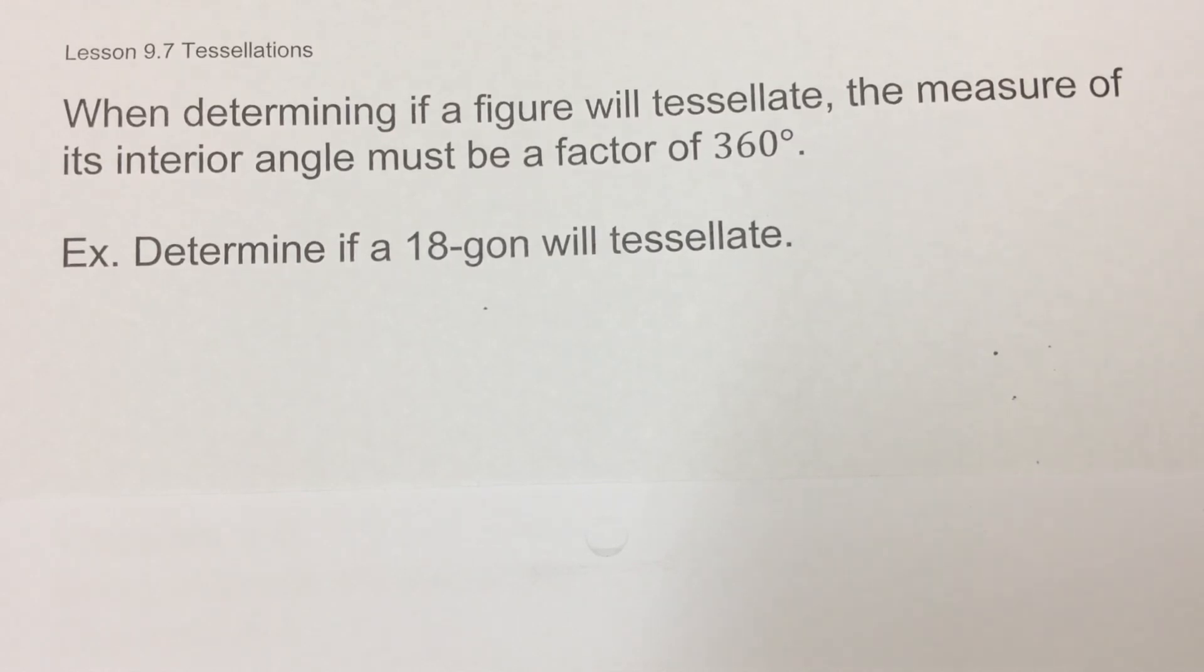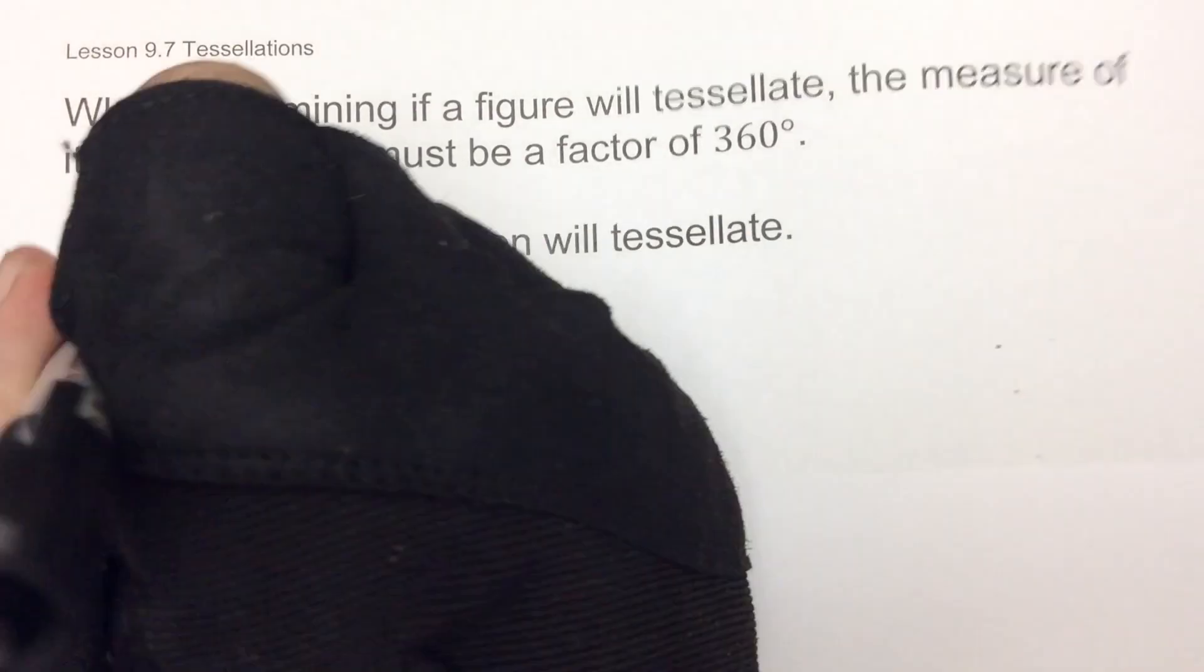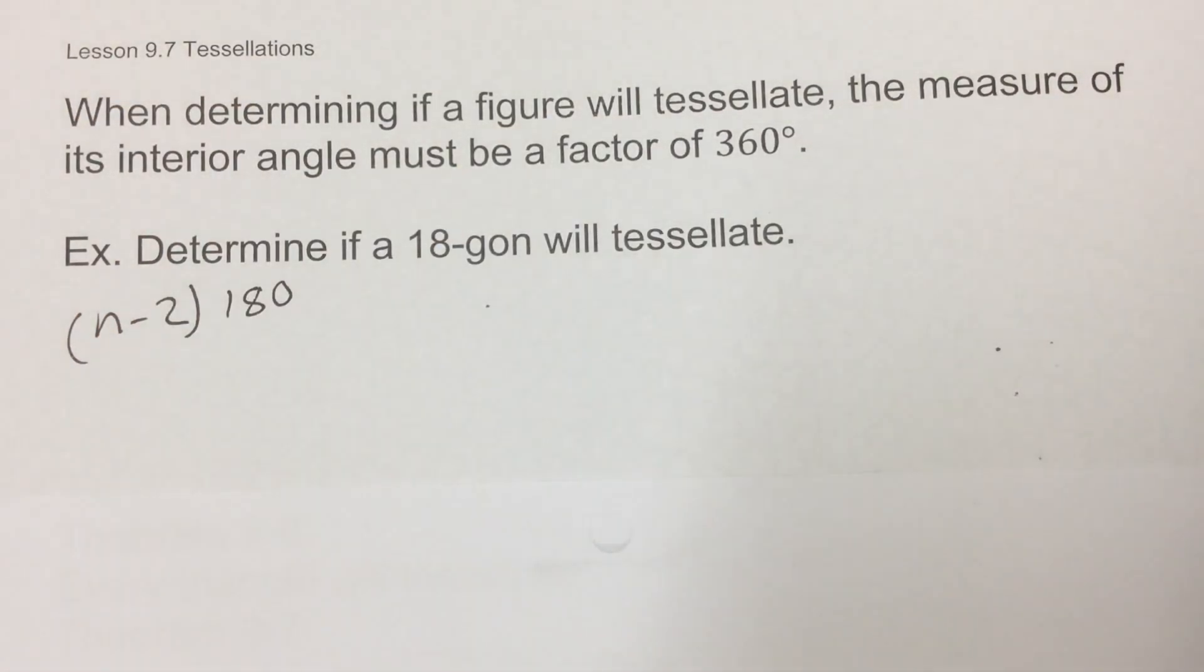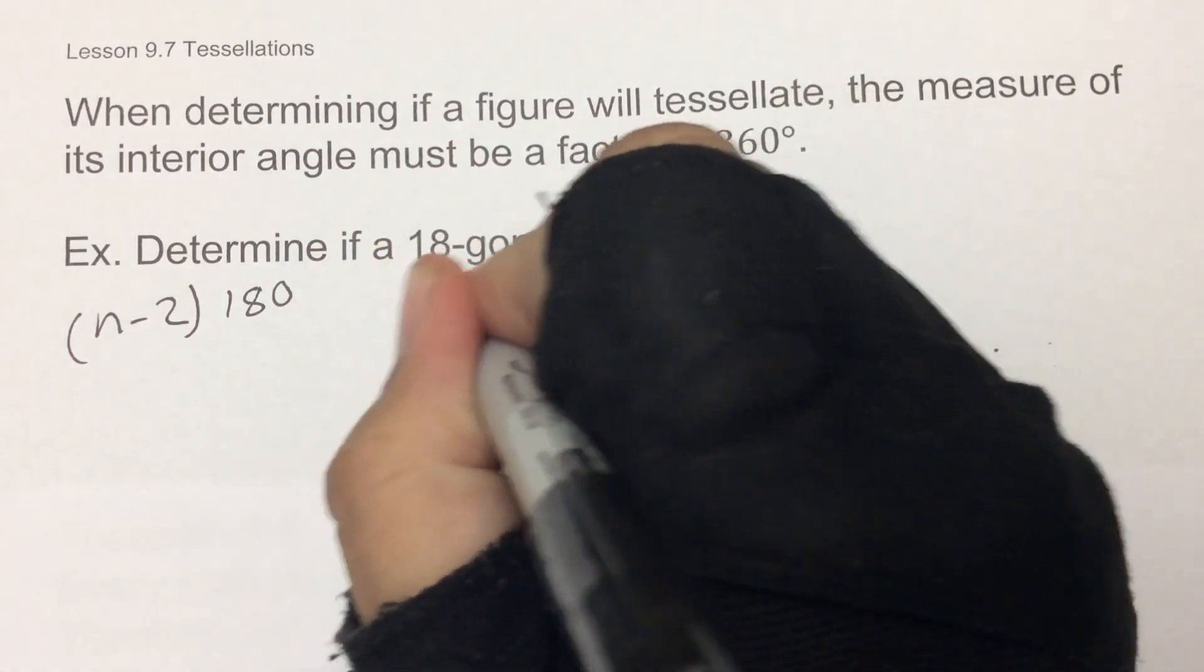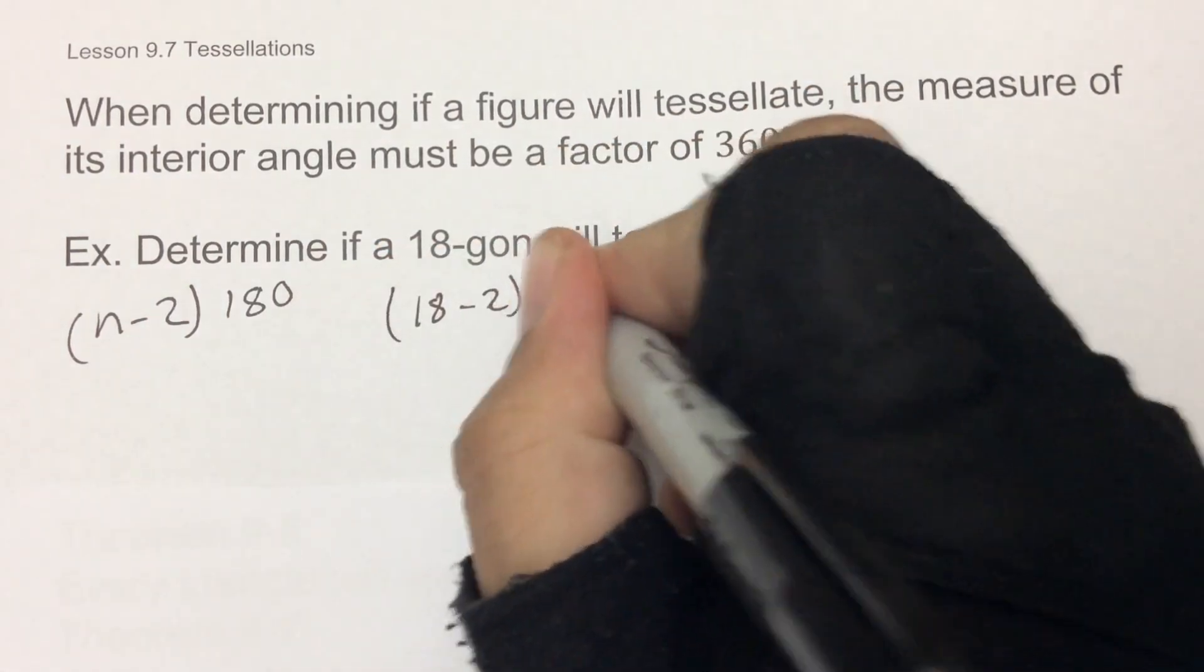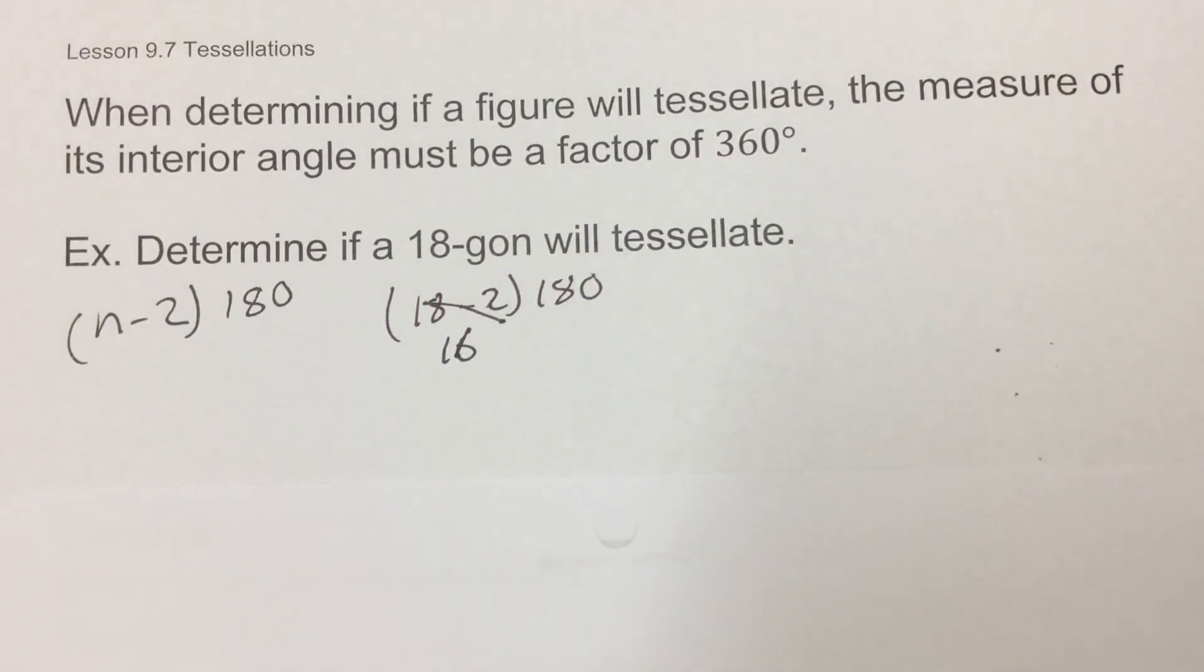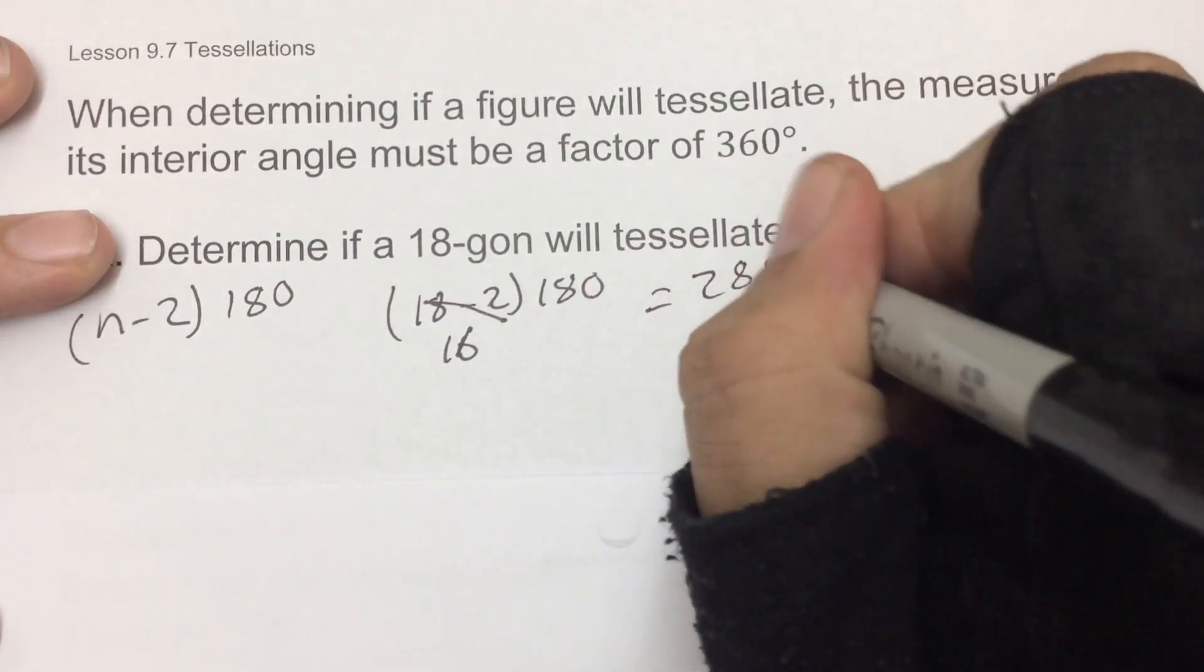Will it tessellate? Well, first off, 18-gon. Well, how many sides is an 18-gon? Well, 18. Well, how many degrees is that? Well, that's where we're going to use that n minus 2 times 180 to get the number of degrees that those angles would add up to be when you put them all together. So in this case, we would do 18 minus 2 times 180, which is 16. So if we go to our calculator and we go 16 times 180, all those added together would end up being 2880.